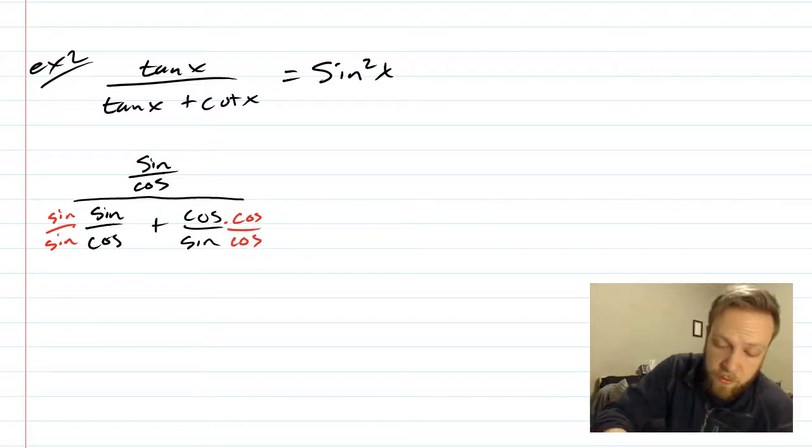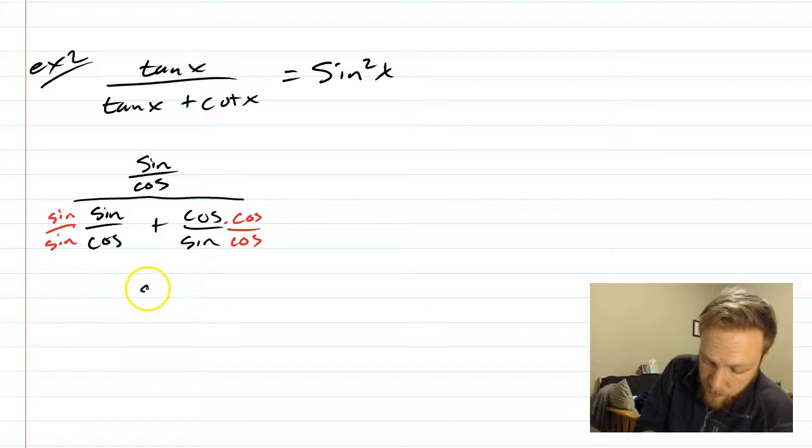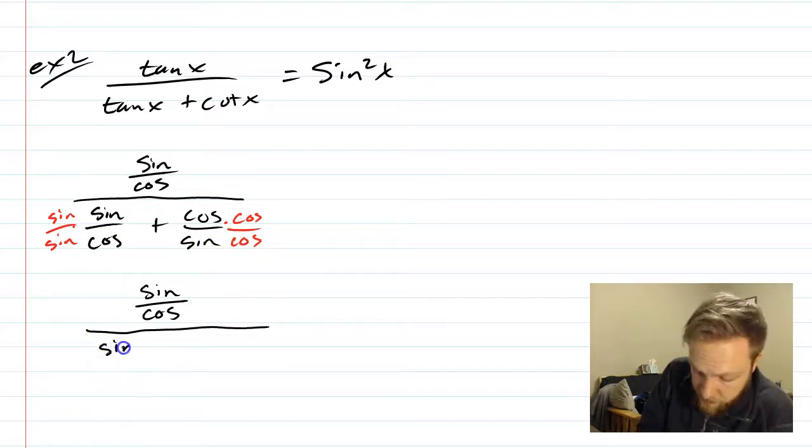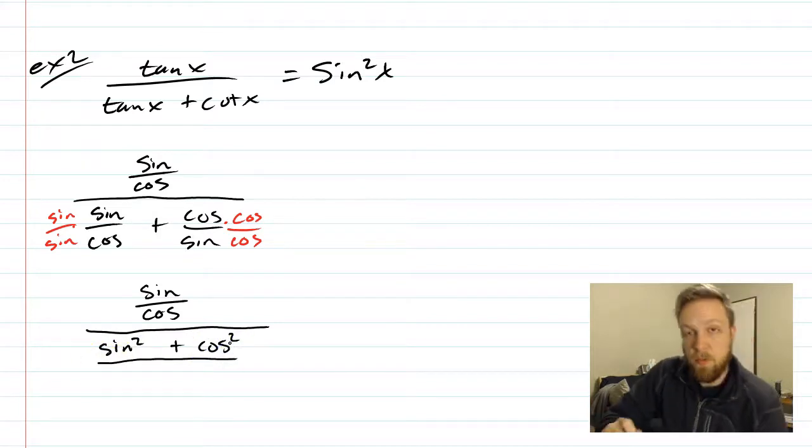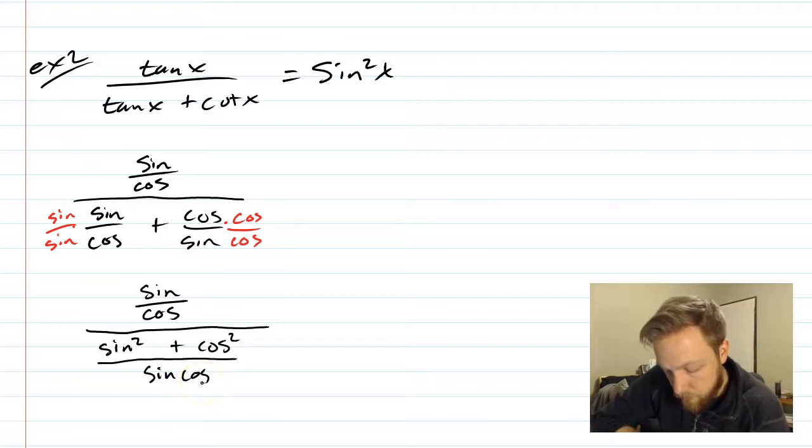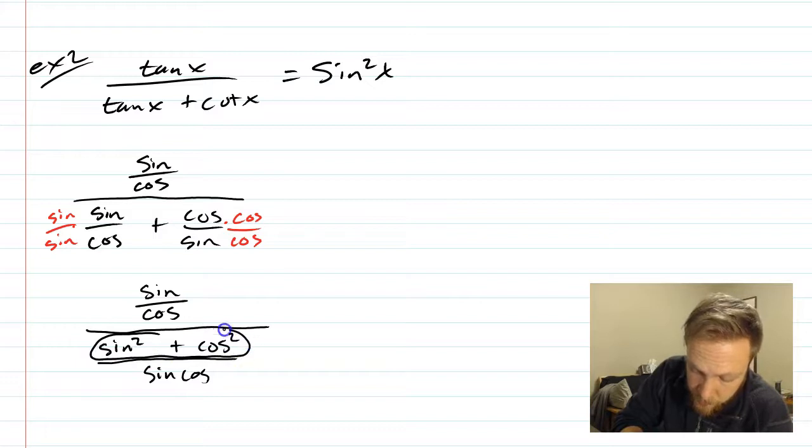So back to this. We're going to find common denominators on the bottom, and this means we have to times by sine over sine and this by cosine over cosine. So I get that common denominator of sine and cosine. So this is sine over cosine all over, and that's going to be one fraction down there. We're going to have sine squared over here, we're going to have cosine squared there, and we also have sine cosine on the bottom.